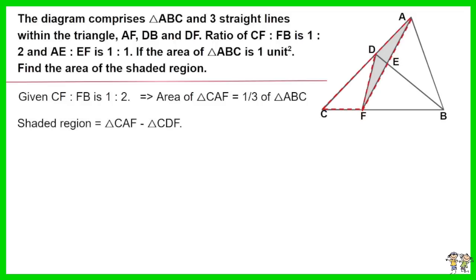The shaded region equals triangle CAF minus triangle CDF. Given the ratio of CF to FB is 1 to 2, thus triangle CDF is 1 third of triangle CDB. As such, triangle DFB equals 2 triangle CDF.